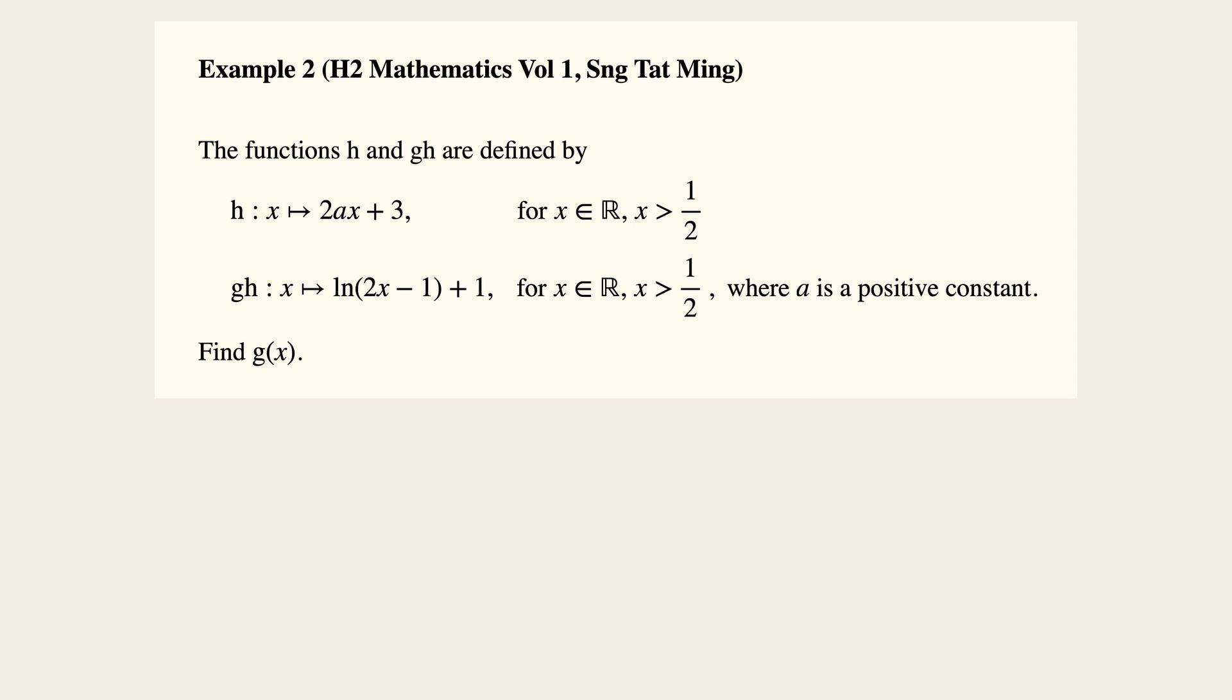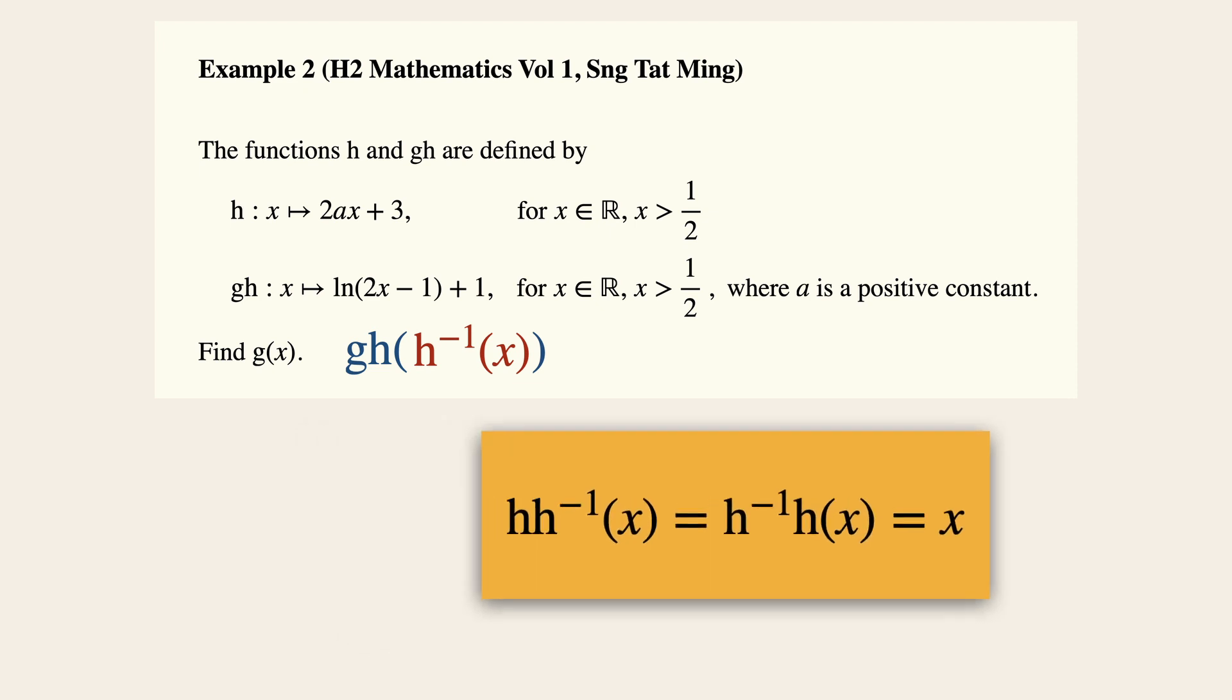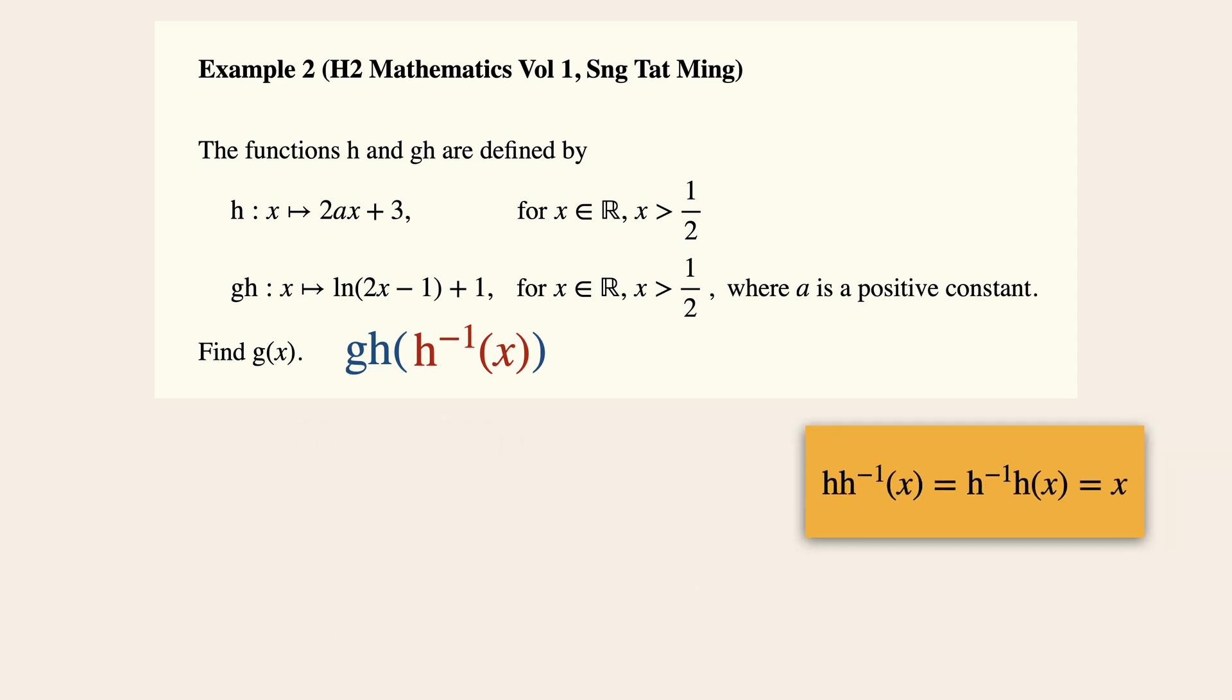And this time we are going to find the inverse of h. By finding the inverse of h, we can then substitute that into the composite function gh. And remember this rule: the composite function of h, h inverse, and h inverse h is equal to x. Therefore, if we were to substitute h inverse x into the composite function gh, we will then have the function gx itself.